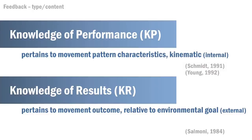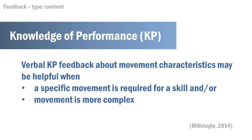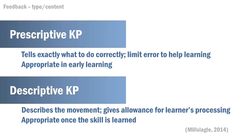Knowledge of performance pertains to the movement pattern. Knowledge of results is in regards to the outcome of the movement in terms of the environmental goal. Both forms of feedback have their place. Knowledge of performance feedback may be helpful when a specific movement is required for a skill or the movement is more complex. This may be prescriptive — where we tell a person what to do to prevent or correct errors — or descriptive, where we simply describe and encourage the learner to find their own solutions. Prescriptive is appropriate right at the beginning, but descriptive feedback later on encourages learners to find their own solutions.